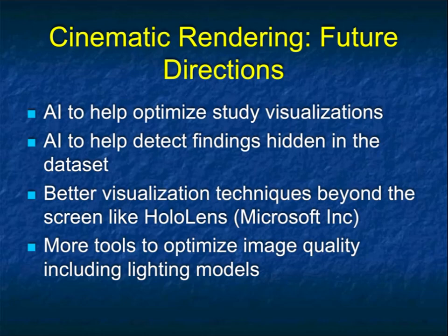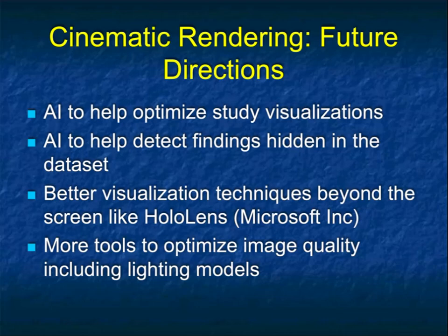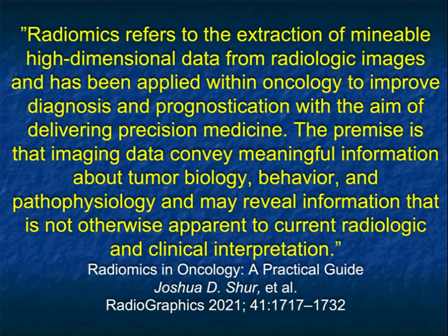With future directions for cinematic rendering, I think AI is going to be critical to help optimize study visualizations, and also important for detecting findings hidden within these complex data sets. Better visualization through augmented reality — going with the HoloLens by Microsoft but perhaps beyond that — is key. One challenge is that a pair of HoloLens costs about $3,500 to $4,000, which is hard to scale. Microsoft will likely come up with cheaper options soon, and by end of 2022 both Apple and Facebook should have reasonably priced glasses for virtual reality in the $200 to $400 range. We also need more tools, easier workflows, and the ability to change the cinematic display in real time during HoloLens use.